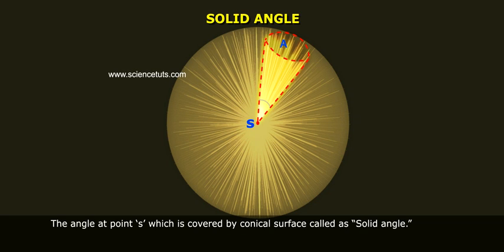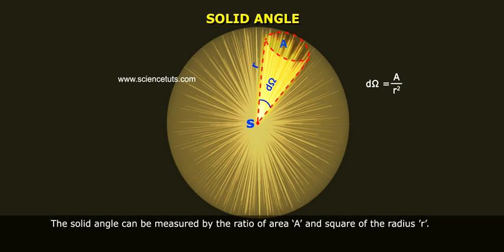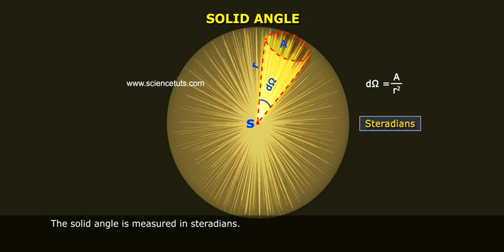The angle at point S which is covered by the conical surface is called the solid angle d omega. The solid angle can be measured by the ratio of area A and square of the radius r. The solid angle is measured in steradians.